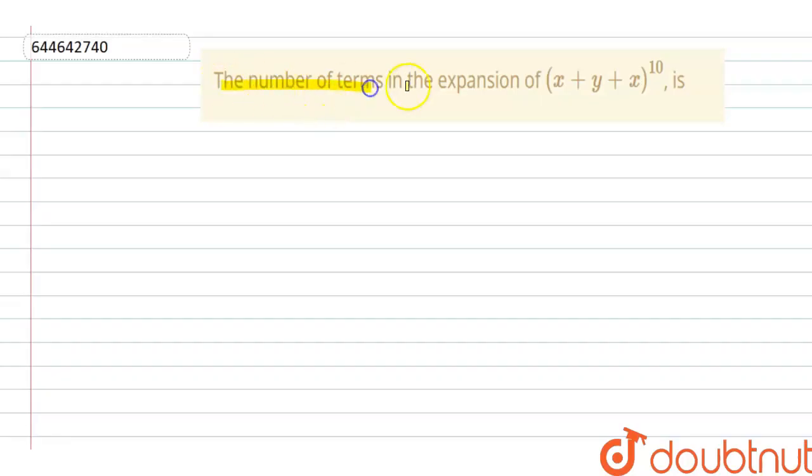Question is, find the number of terms in the expansion of x plus y plus z to the whole power 10. Here is z, not x. This is z. So, solution.